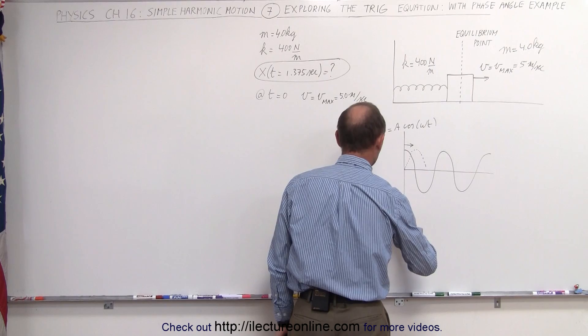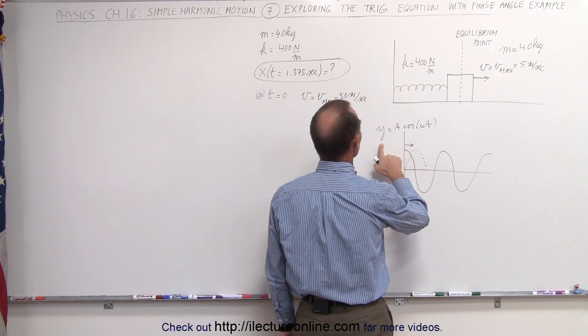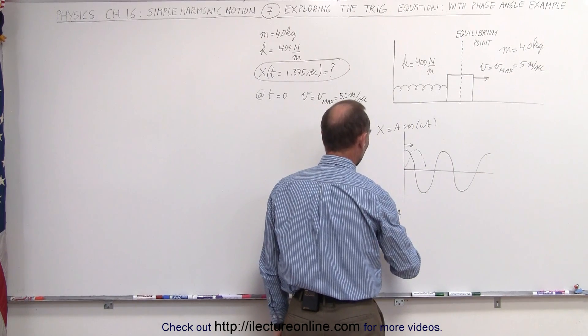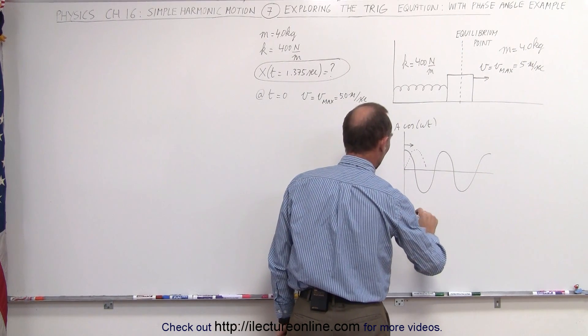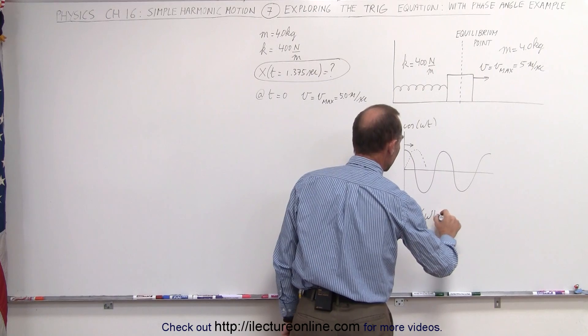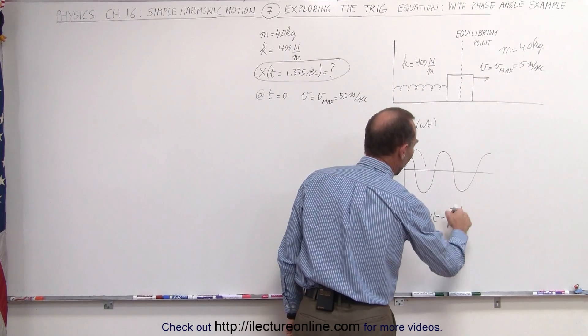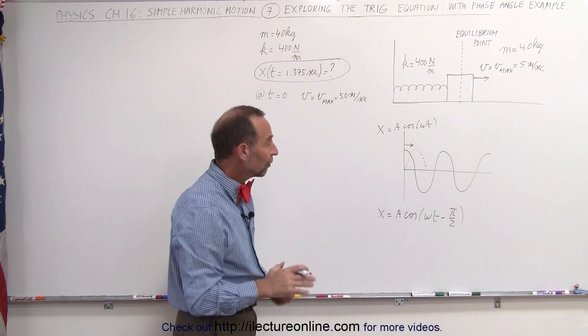The equation then becomes y equals a, or I shouldn't be using y in this case, I want to use x. So let me keep using x, because that's what I've been using before, x equals a times the cosine of omega t minus pi over two. Pi over two, that's 90 degrees, that's a quarter of a cycle.